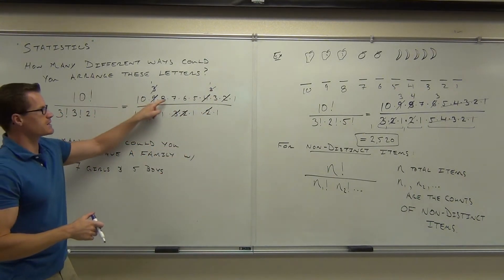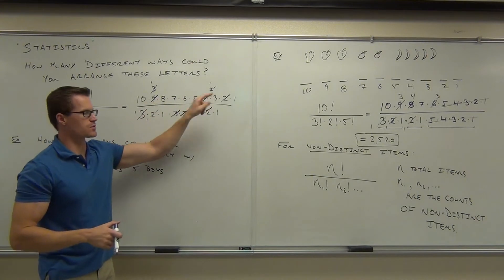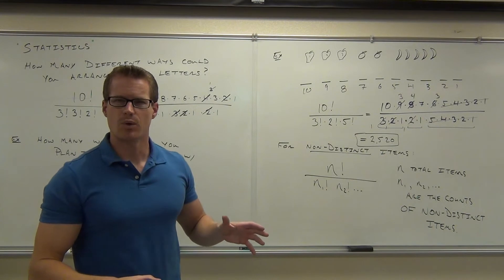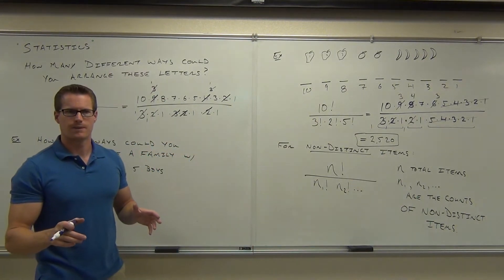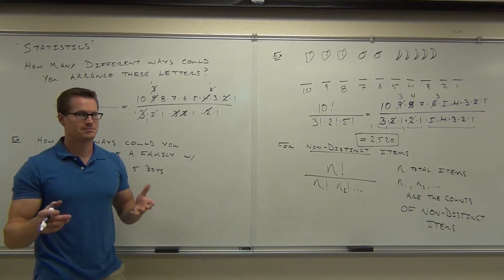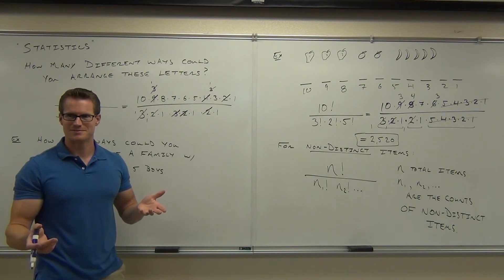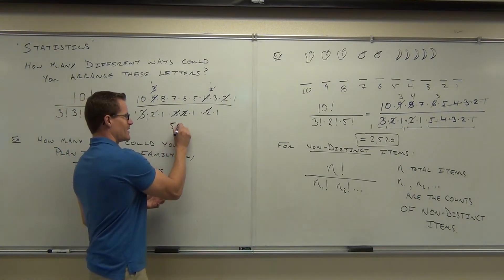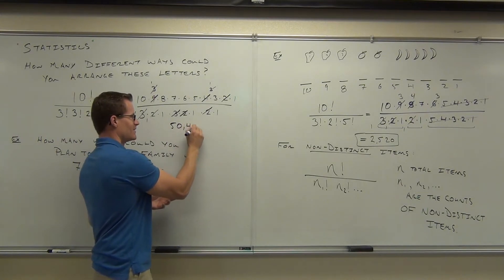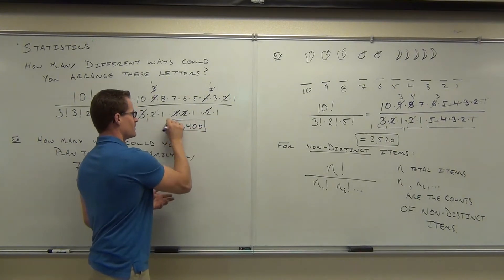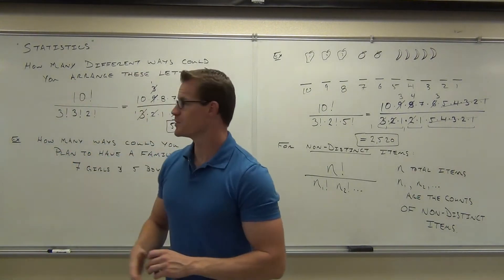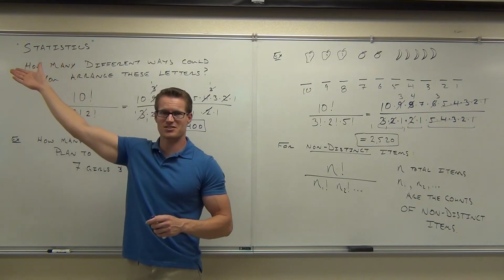Then I just have to multiply 10 times 8 times 7 times 6 times 5 times 3, and I can get the appropriate answer. Did you guys all do something similar to that? What did you get? 50,400 different words you can make up from statistics. Fortunately, we chose the best one at the beginning. Just statistics. That's great.